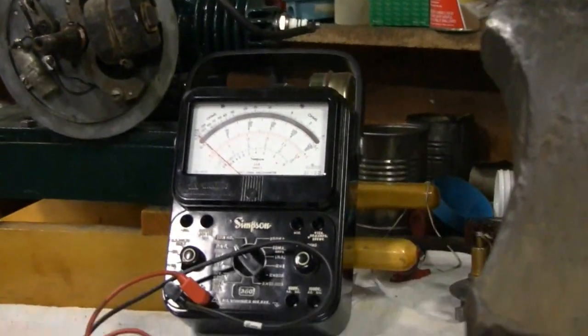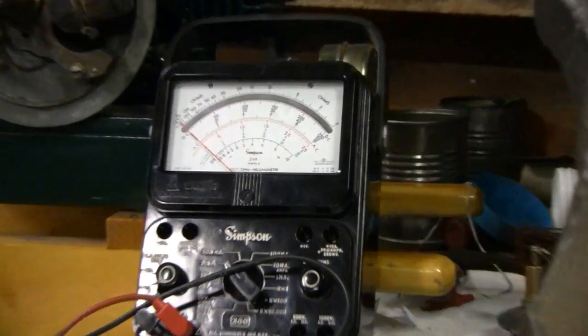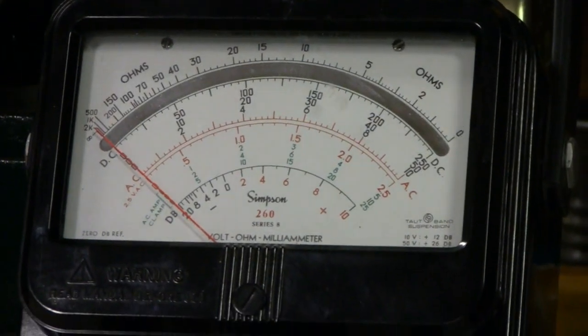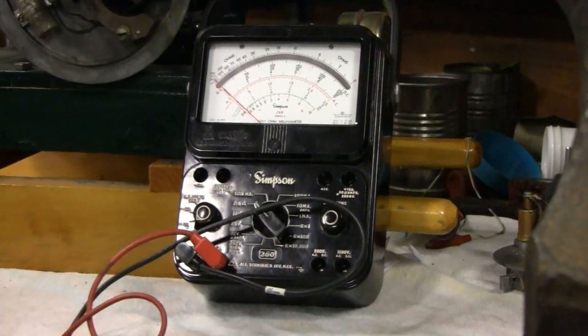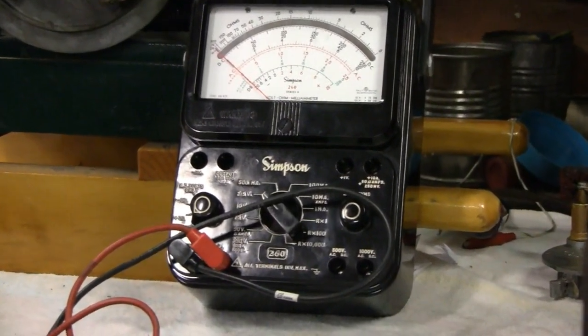So we got the Simpson 260 meter, that's pretty much the standard for the analog meters for years. You know, some of these are a little intimidating to some people, but there's really nothing to it.